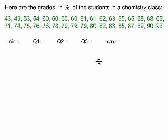To make a quartile diagram, we need to know five key values: the minimum, Q1, Q2, Q3, and the maximum.